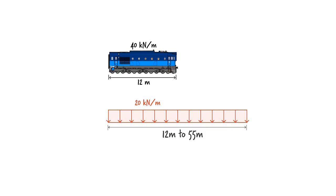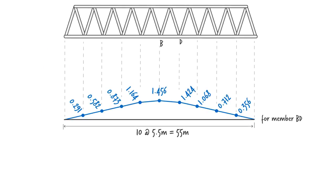Member BD, situated along the bottom cord of the truss, is always in tension. That is why the influence line for the member appears above the x-axis. The diagram shows the various force magnitudes in the member based on the location of a unit load.